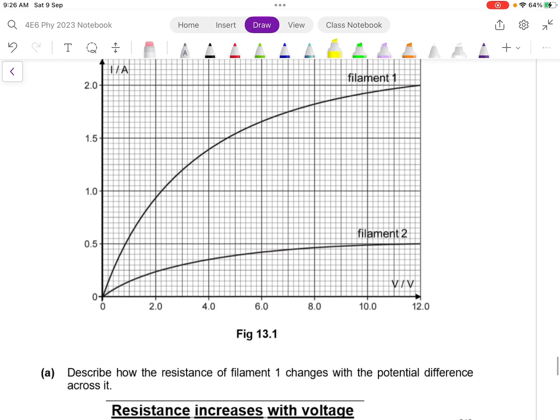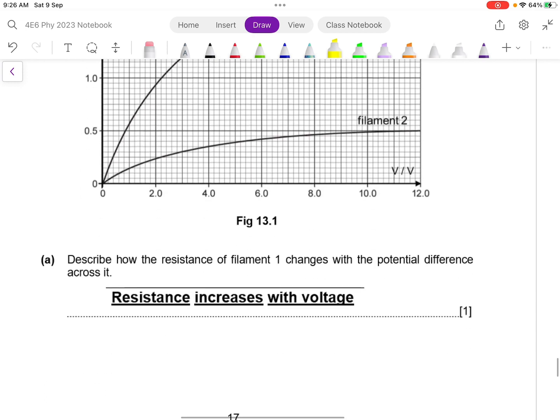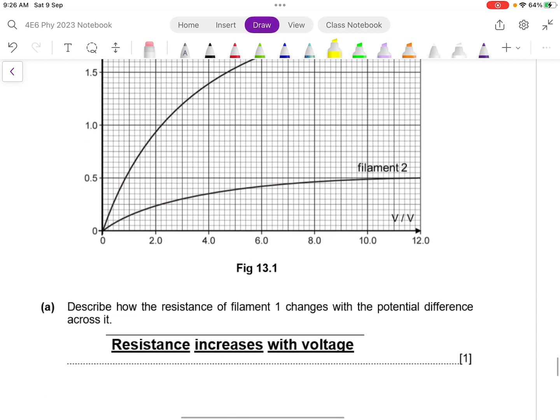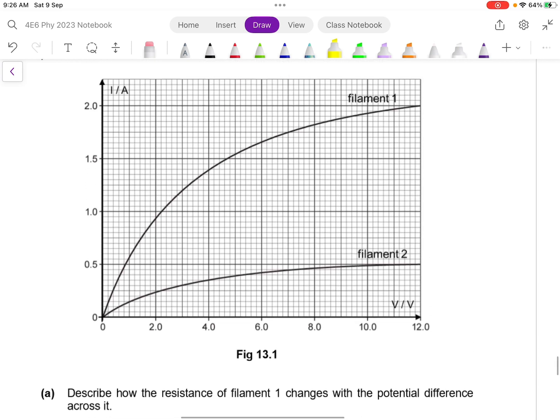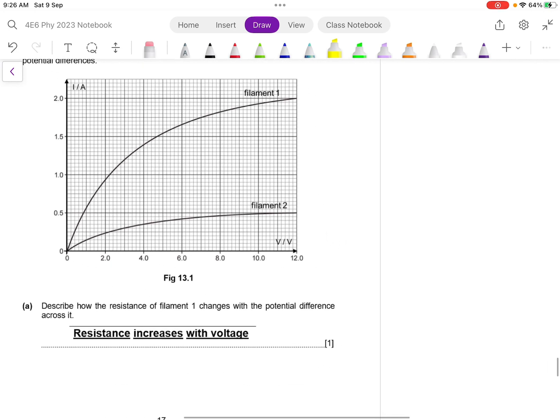So because these are non-linear graphs, all you need to do is just to observe how the resistance are changing when voltage increases. For those of you who still couldn't figure out how to see the resistance, I will spend maybe one minute to talk about this. So if you look at the graph, it is an I-V graph, I over V.